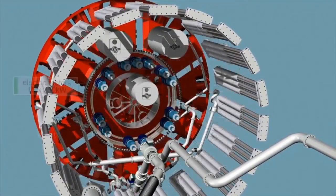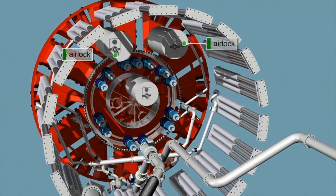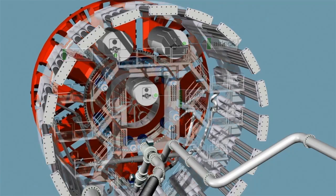The cutting wheel is driven by a total of 15 electric motors with a nominal power of 250 kilowatts each and a maximum torque of up to 39,984 kilonewtons. There are three air locks for maintenance. The center lock is movable and can be linked to the pressure-protected interior of the cutting wheel.